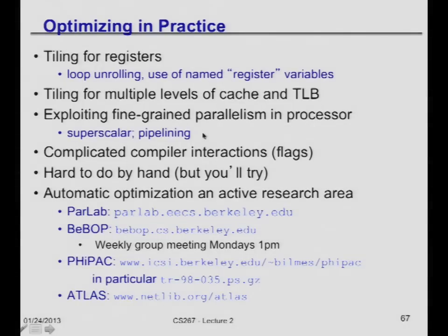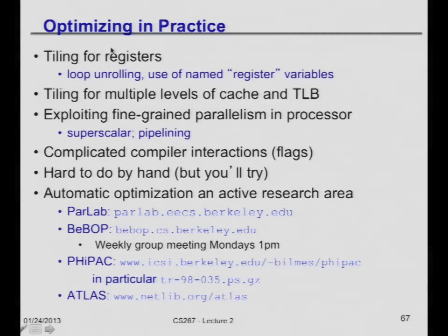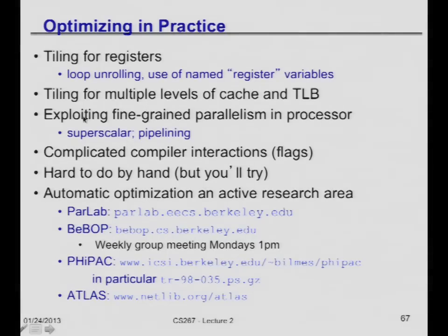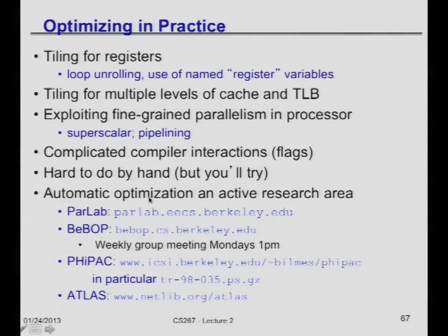Here's the kind of search space that auto-tuners explore — also a subset you might consider for your first homework. There's tiling for registers (the heat chart I showed), all the block sizes for other cache levels and the TLB, superscalar architecture code generation, pipelining, and compiler interaction: flags like -O3, -O2, telling the compiler to try combinations of optimizations. Here are references to where people have done auto-tuning before if you want hints.